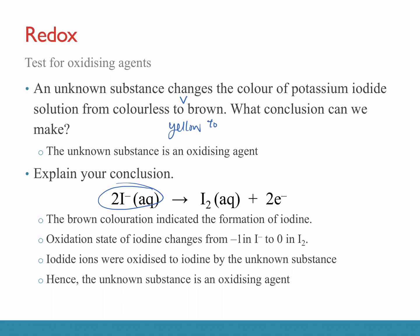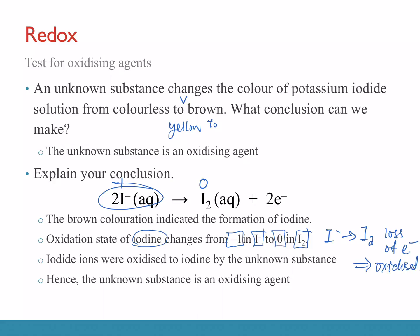The oxidation state of iodine in iodide (the ion with a negative charge) is −1, and in iodine (elemental state) it is 0. The oxidation state of iodine increases from −1 to 0, with loss of electrons — OIL RIG: oxidation is loss — so iodide is oxidized to iodine. Therefore, the unknown substance is the oxidizing agent.